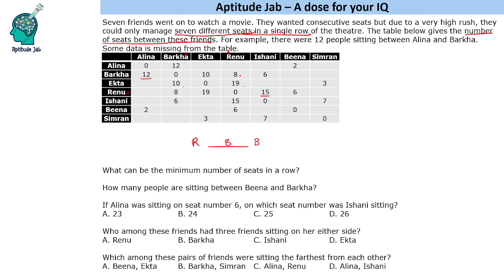Now if we see the next person, that is Ekta in relation to both of them. There are 10 persons between Barkha and Ekta, and 19 persons between Renu and Ekta. So this means that Ekta must be on the far side of Renu — 8 seats, then the 9th, then 10 more persons, 19 persons, and then Ekta. So we put Ekta as well.